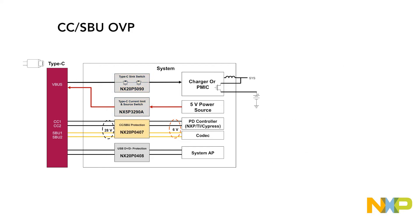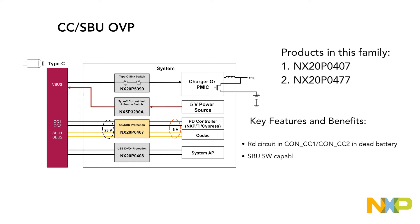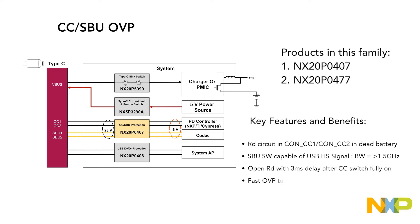The CC-SBU-OVP family of load switches includes the NX20P0407 and the NX20P0477, featuring CC-SBU protection. These products stand on their own, with an RD circuit for CC1 and CC2 while on a dead battery, an SBUSW capable of USB-HS signal greater than 1.5GHz, an open RD with 3ms delay after the CC switch is fully on, and a fast OVP turnoff time.